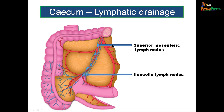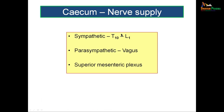For lymphatic drainage, epicolic lymph nodes on the surface of the cecum drain to paracolic lymph nodes on the medial side of the large intestine. These drain to intermediate ileocolic lymph nodes, then to the preterminal superior mesenteric lymph nodes, and ultimately to the para-aortic lymph nodes on either side of the aorta.